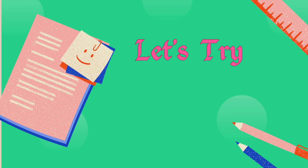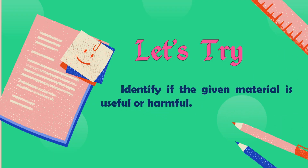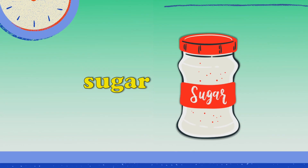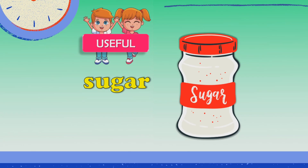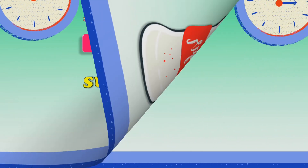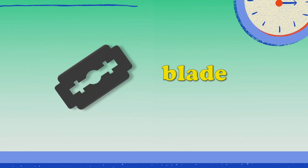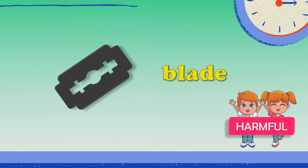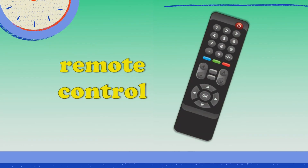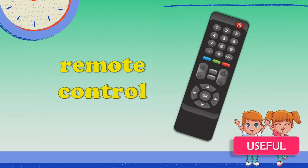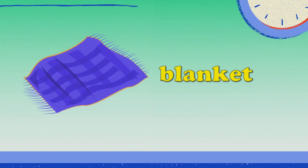Now, let's try! Let us identify if the given material is useful or harmful. First, we have sugar. Is it useful or harmful? Very good! Sugar is an example of a useful material. How about a blade? Correct! A blade is an example of a harmful material. Remote control — correct! A remote control is an example of a useful material. Next, we have blanket. Nice! A blanket is also useful.